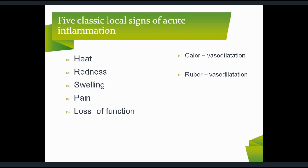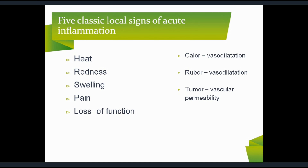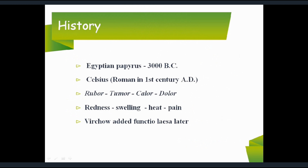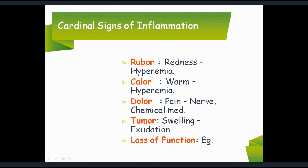The classical signs or cardinal features of acute inflammation are: heat, redness, swelling, pain, and loss of function. You also know these as calor, rubor, tumor, dolor, and functio laesa. The first four were included originally, and functio laesa was added later.